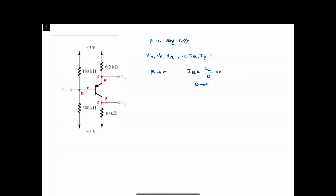In this PNP transistor, IE flows in one direction, IC in another, and IB as well. Based on these current directions, I-emitter equals I-base plus I-collector. Since we found that I-base is zero, I-emitter is therefore equal to I-collector.